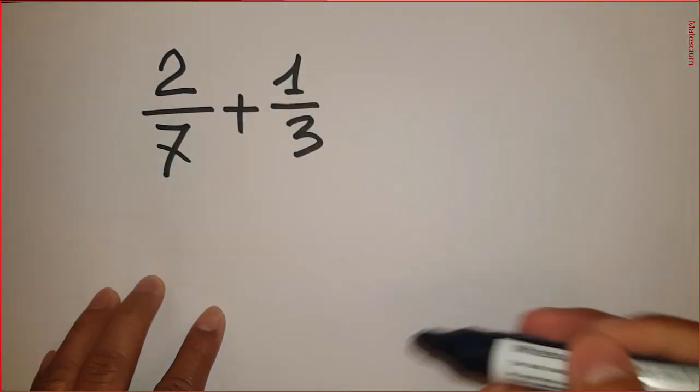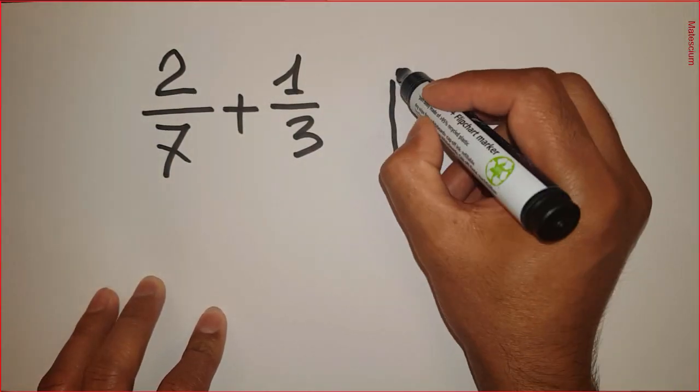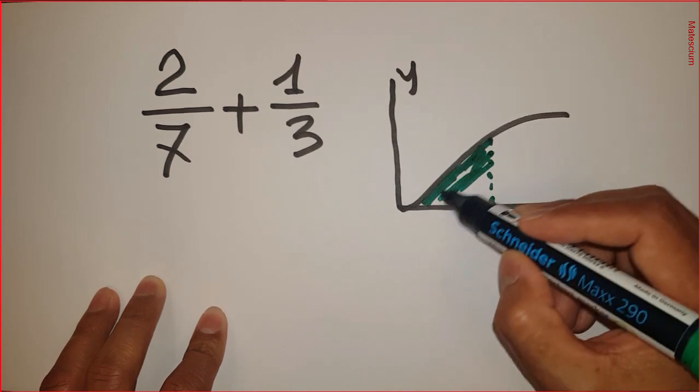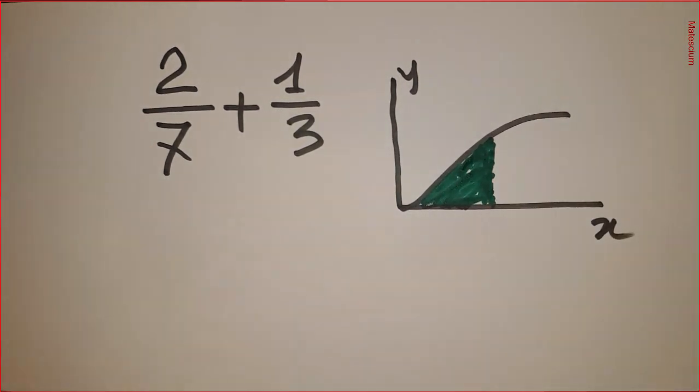Hey all math lovers. Let's say 2 over 7 is added with 1 over 3. How can we graphically understand this simple math problem?